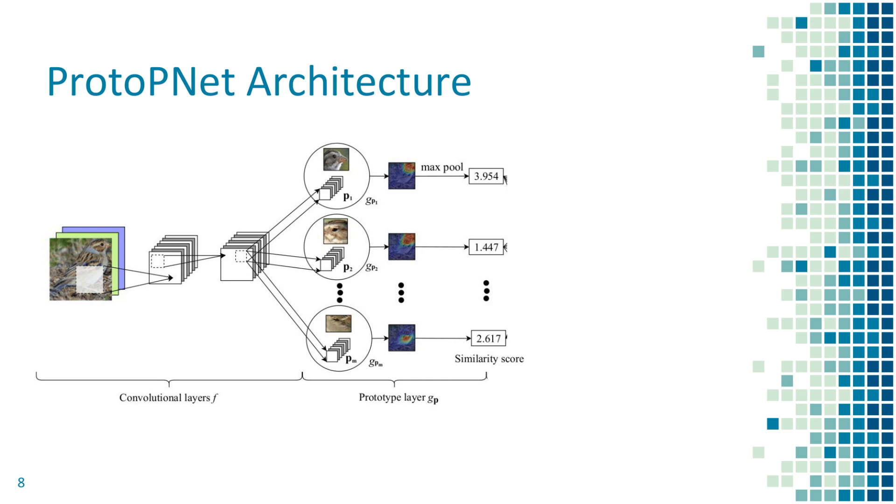In the prototype layer, the patches of convolutional features are compared to each of the learned prototypes using L2 distances. This generates a prototype activation map which tells us both the location of the most similar patch as well as the degree of such similarity as indicated by similarity score.